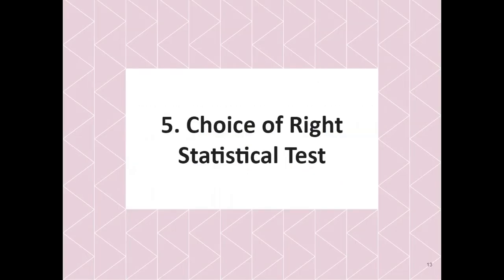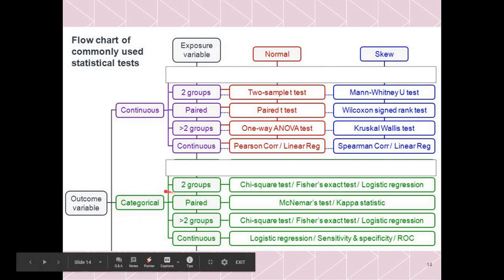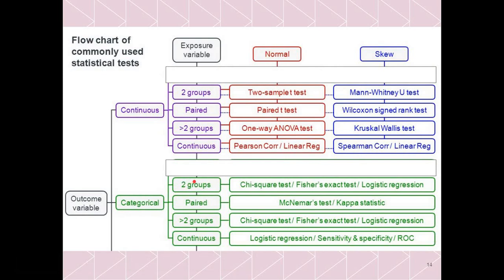The fifth and last step is the choice of statistical test. Using this flowchart: if your outcome variable is categorical — for example, cured or not cured — and your exposure variable is between two groups such as drug received versus drug not received, then we use the chi-square test or Fisher's exact test, or logistic regression. The chi-square test is simple but cannot be used when expected cell values are less than five in more than 20 percent of cells — in that case use Fisher's exact test.